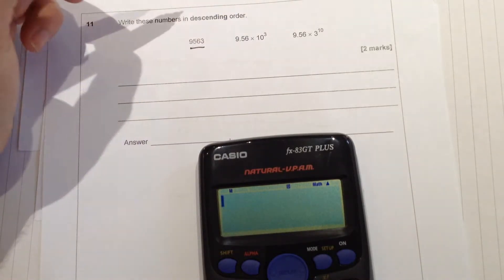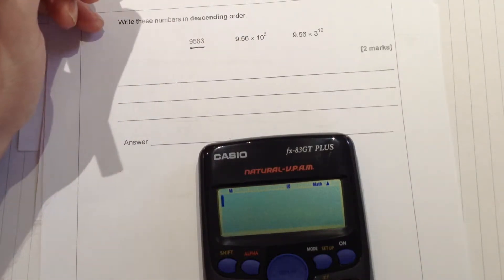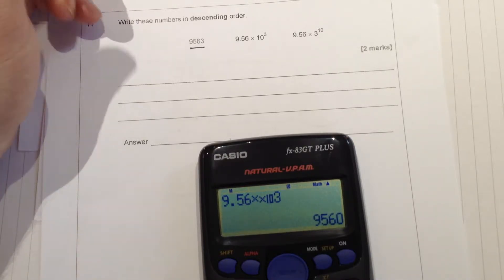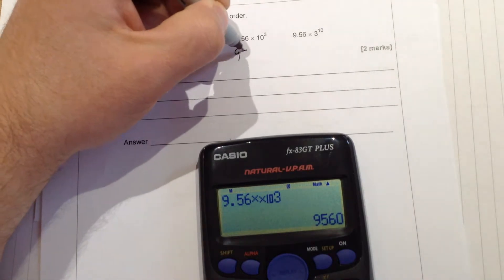9.56 times 10 to the power of 3. Well that's simply, if we type it into the calculator, 9.56 times 10 to the power of 3 gives us 9560.